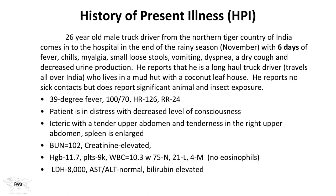Additional labs: LDH markedly elevated at 8,000; AST/ALT transaminases were normal; bilirubin elevated. This pattern — hemolysis with elevated LDH, thrombocytopenia, renal impairment, jaundice, and normal transaminases — is characteristic of severe malaria.